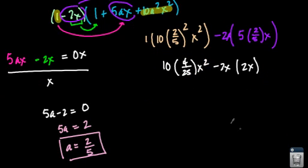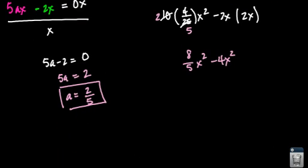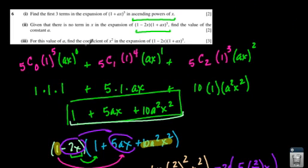Simplifying: 10 times 4/25 x squared minus 4x squared. That gives 8/5 x squared minus 4x squared. Getting a common denominator of 5: 8/5 minus 20/5, dropping the x squared since we just need the coefficient, gives negative 12/5. They just asked for the coefficient, so negative 12/5 it is.